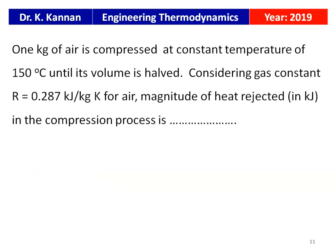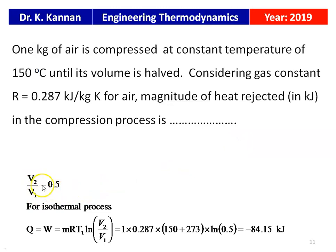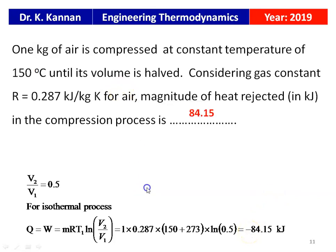From the 2019 question paper: 1 kg of air is compressed at a constant temperature of 150°C until the volume is halved (V2/V1 = 0.5). Given R = 0.287 kJ/kg·K for air, find the magnitude of heat rejected. For the isothermal process, heat transfer equals work done: Q = MRT₁ ln(V2/V1) = 1 × 0.287 × (150 + 273) × ln(0.5) = −84.15 kJ. The negative sign indicates compression. The answer is 84.15 kJ.